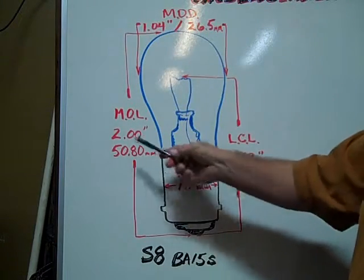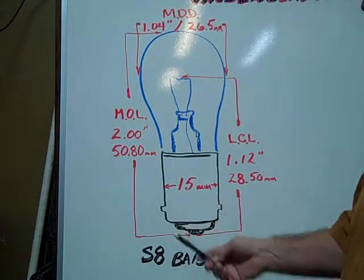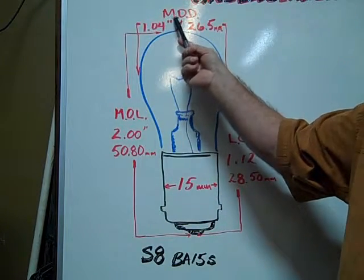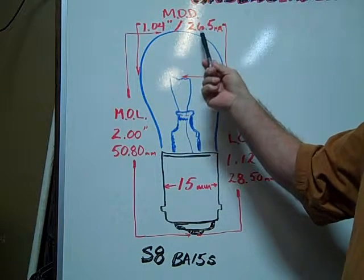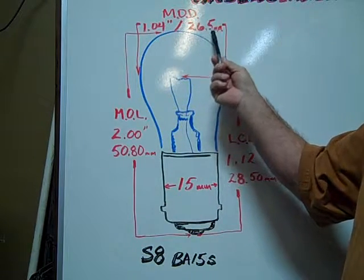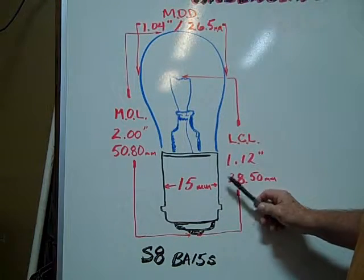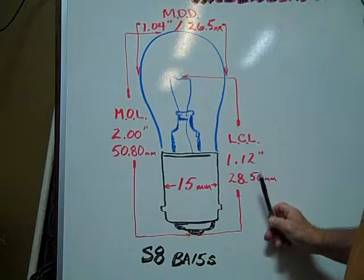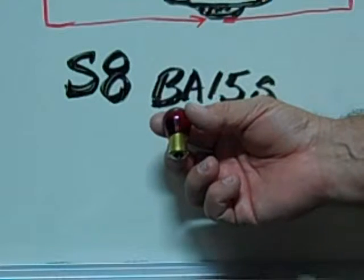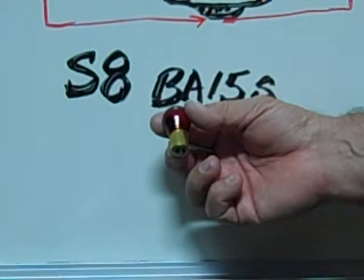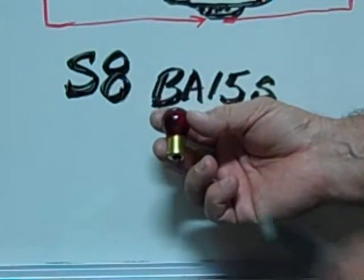Maximum overall length is 2 inches or 50.80mm. Maximum outer diameter is 1.04 inches or 26.5mm. The light center length is 1.12 inches or 28.50mm. This is an example of a number 307 R red painted miniature bulb.